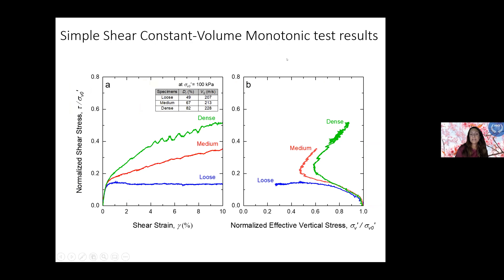I'm going to show some representative results from these materials. These are monotonic test results at three different relative densities that we've been targeting, and you also see the complementary shear wave velocity values for comparison. The behavior shows the expected response given the critical state framework that we know for granular materials, which gives us confidence in terms of expected behavior.